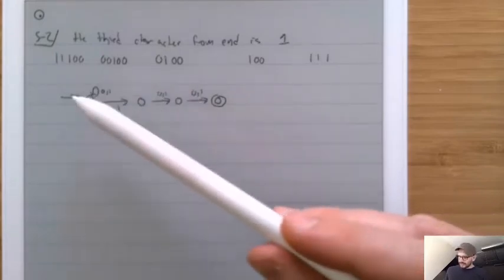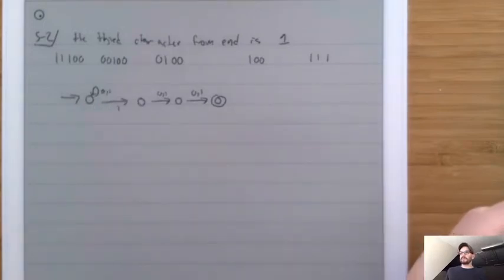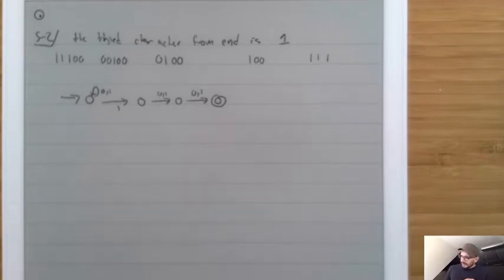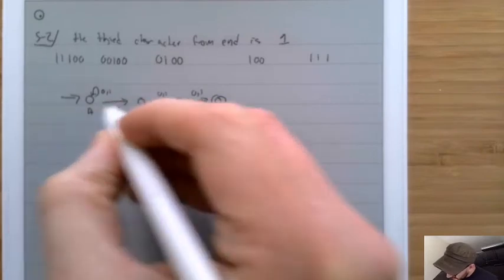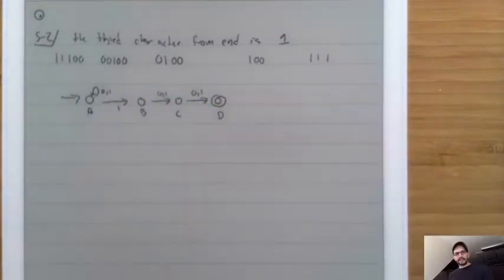Notice that this uses the feature of there being multiple destinations when we see a 1. Let's label these states A, B, C, D and look at what happens when we run on various examples.